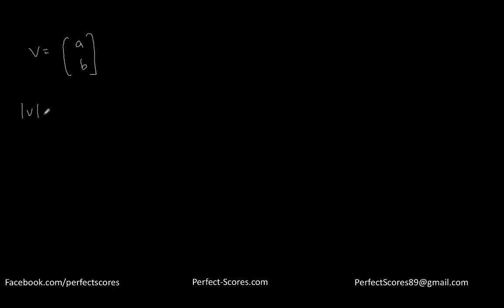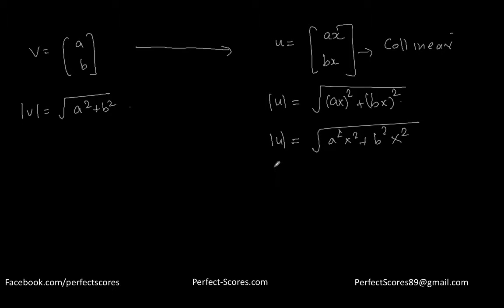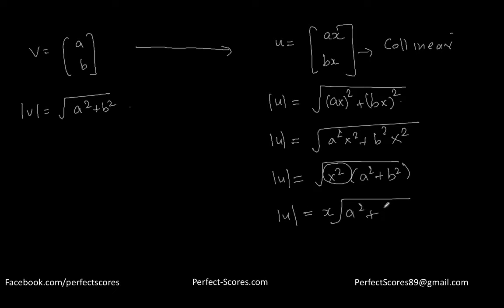Let's say there is a vector with components a and b. The magnitude of v is equal to the square root of a² + b². Now let's say there is another collinear vector u with components (xa, xb). The magnitude of u equals the square root of (ax)² + (bx)², which simplifies to x² (a² + b²). Taking the square root, magnitude of u equals x times the square root of a² + b², so magnitude of u equals x times magnitude of v.